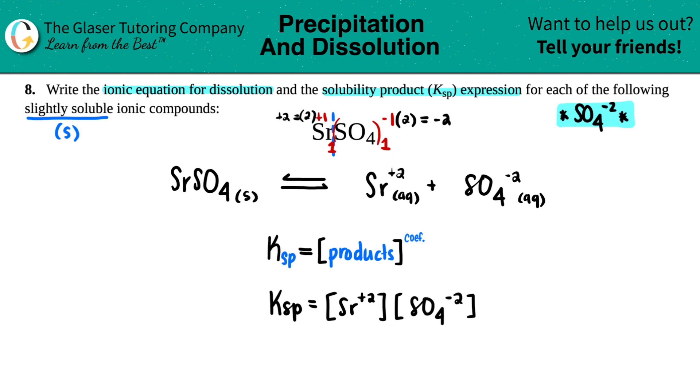So Ksp is going to be equal to the concentration of the Sr²⁺ times the concentration of the sulfate, the SO4²⁻. Or you could say minus two, it doesn't really matter. And then for Ksps, just make sure that you're raising them to the proper coefficients. But in this case, there is only one strontium and one sulfate. So you would both raise these to the first, but anything raised to the first is the same. So for this case, we could leave it as this. But just be careful of that. Because some of them will have coefficients. And then you'll have to put like a two here. All right? So that's the end for this question.